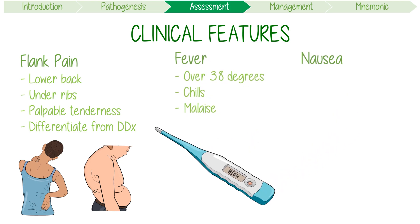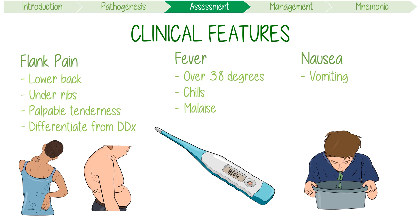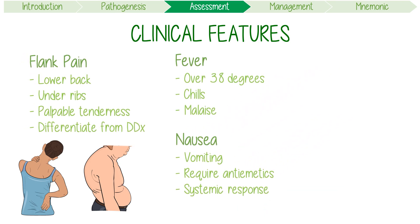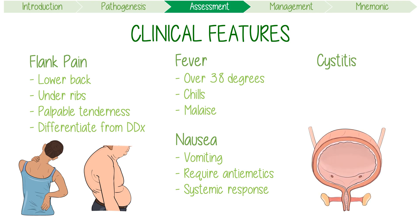Nausea and sometimes vomiting are often associated with a kidney infection and might require antiemetics. This is probably secondary to a systemic immune response. Because it's often secondary to cystitis, pyelonephritis can — but not always — present with symptoms including dysuria, frequency, and urgency.